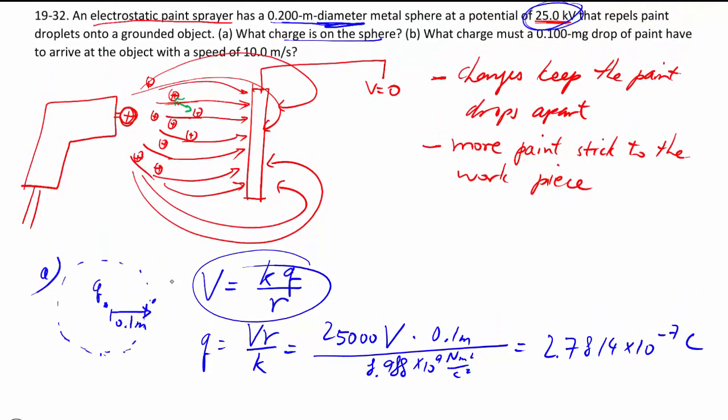So that's just using the electric potential for a point charge. Secondly, they want us to find out what charge must little drops of paint have. So this is the charge that's feeling the electric potential.